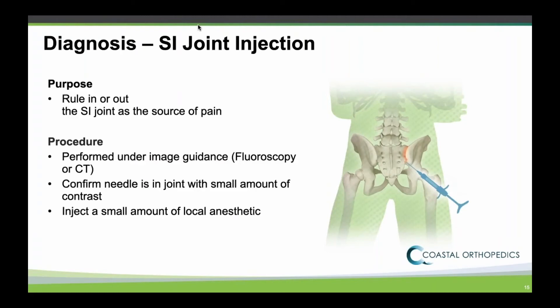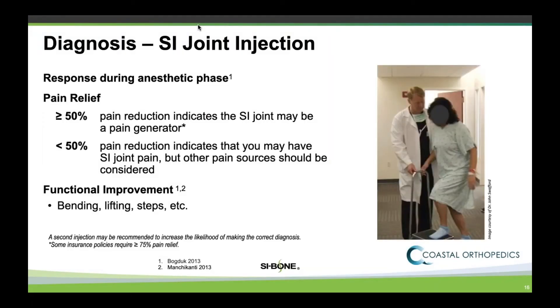The next step is the injection, to rule in or rule out SI joint pain. Generally it's performed using x-ray or a CT scan. The needle is inserted into the SI joint with a small amount of contrast to ensure it's in the right spot, and then we inject the local anesthetic. For patients that experience over 50% pain reduction, the SI joint may be the pain generator. Those that have less than 50% response, it's less likely to be the source. After the injection, it's important to try bending, lifting, and things that normally aggravate the SI joint to see what kind of response you had.